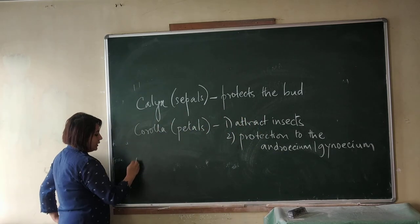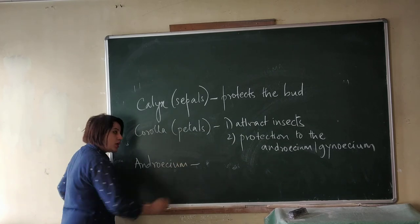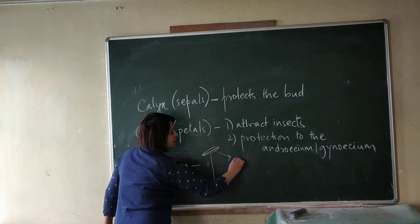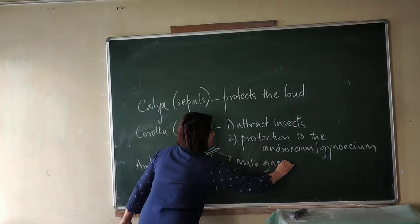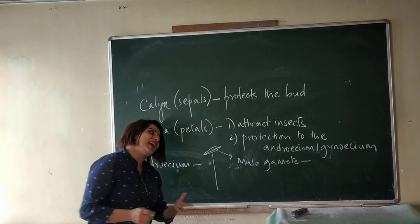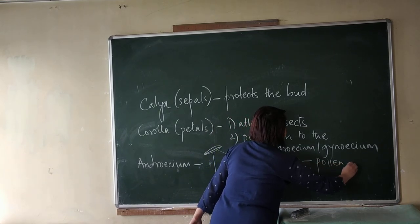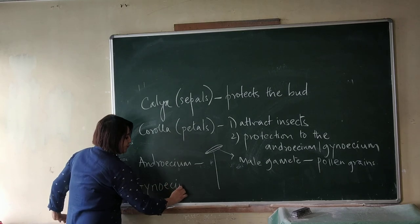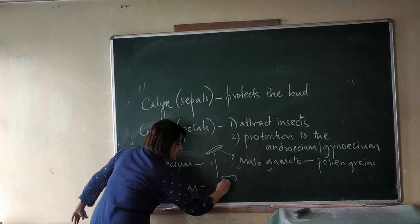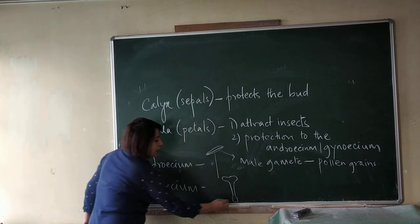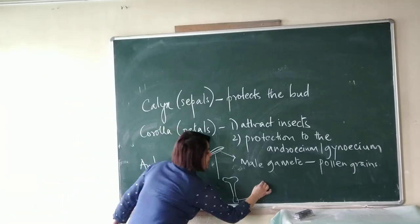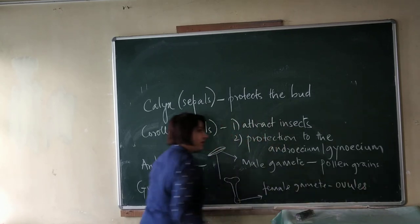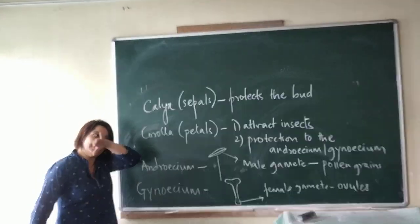The next whorl is the androecium, which is the male part of a flower. It consists of two parts: anther and filament. The anther produces the male gamete, that is the pollen grains. The last whorl is the gynoecium, which consists of three parts: stigma, style, and ovary. The ovary produces the female gamete, that is the ovules.